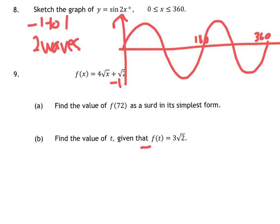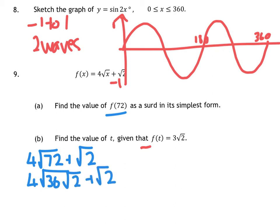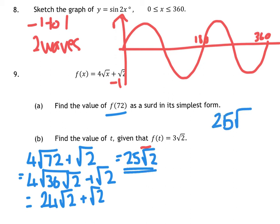Question 9 wants us to find the value of f of 72, so this is when you sub in x is 72. So we have 4 root 72 plus root 2. If you want to simplify root 72, that is 36 and 2. Now the square root of 36 is 6. There's a 4 in front, so 6 times 4 is 24. So we've got 24 root 2 plus another root 2, which is 25 root 2 in its simplest form. So that is your answer for part a, 25 root 2.